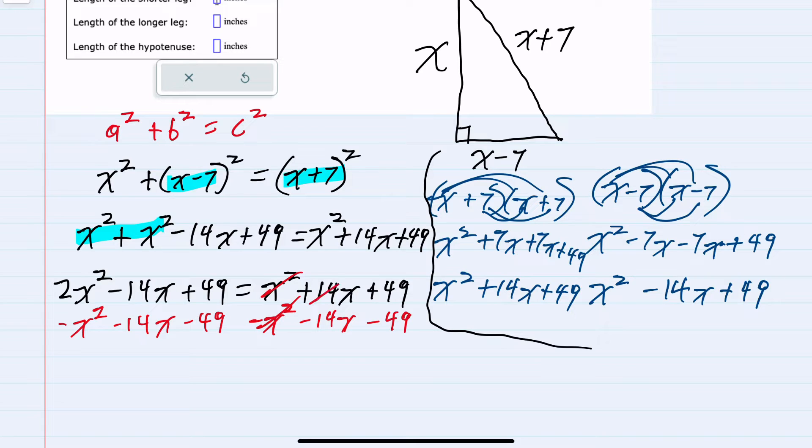And since everything on the right hand side cancels I now have equal zero. On the left hand side 2x squared minus x squared is 1x squared minus 14x minus 14x is minus 28x and the 49's cancel.